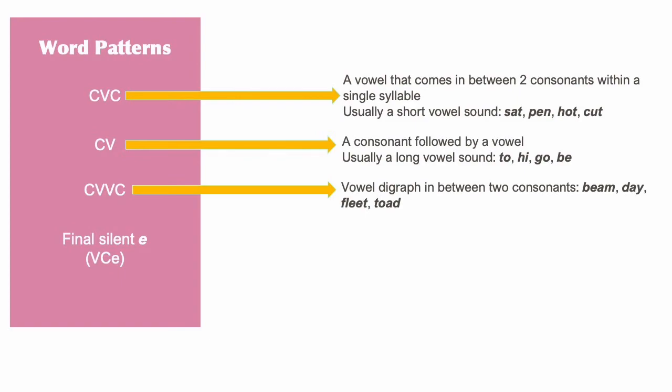The CVVC pattern represents a vowel digraph or diphthong in between two consonants, such as the word BEAM or the word TOAD.